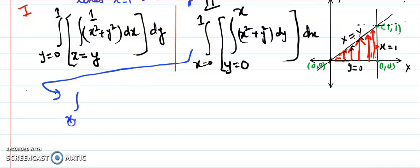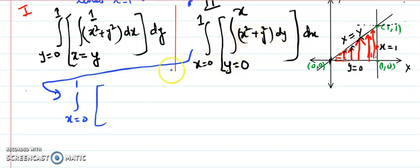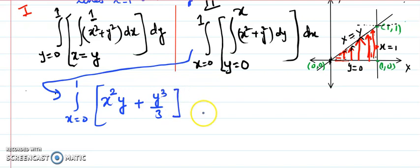With x constant, the integration of x squared gives x squared times y, and the integration of y squared gives y cubed over 3. The limits of integration for y are from 0 to x, and dx is held for the outer integral.